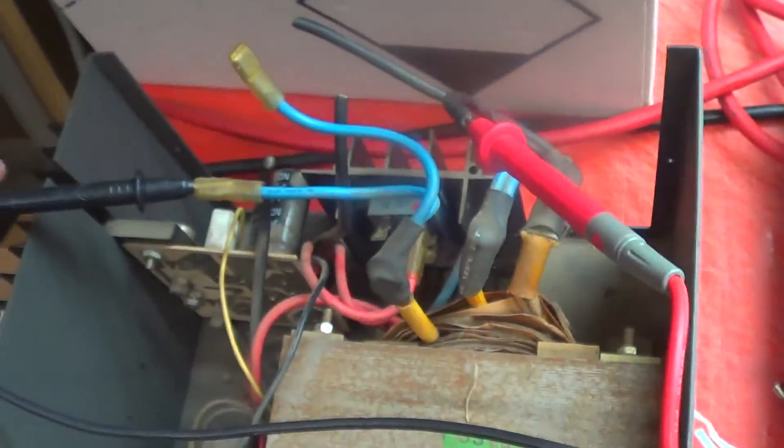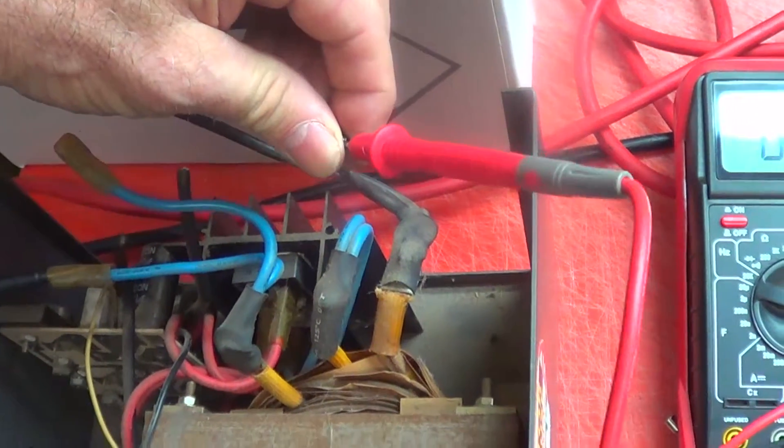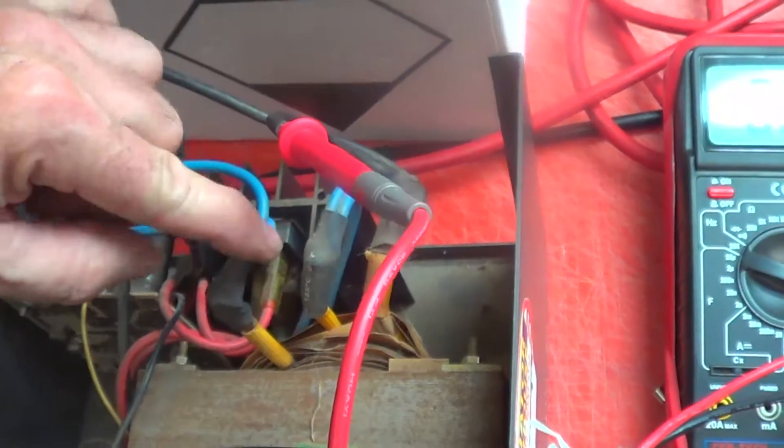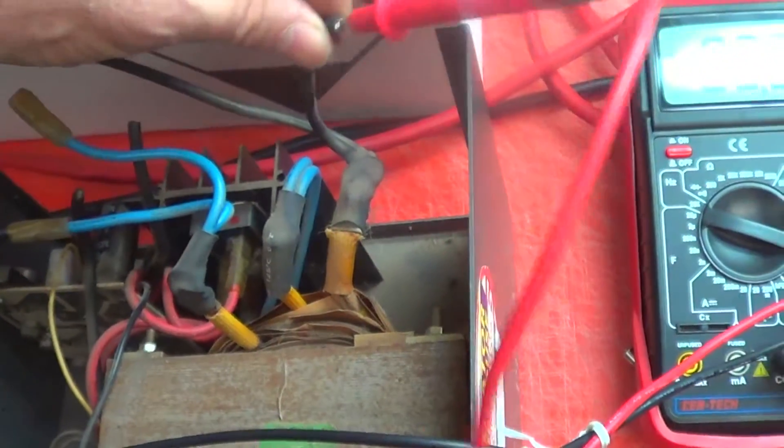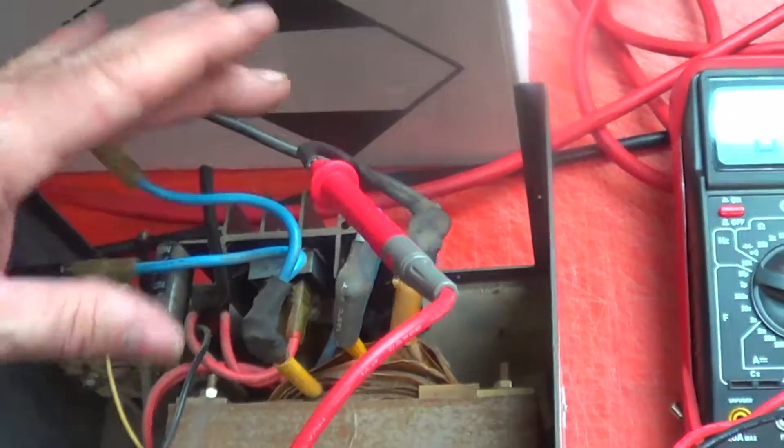We've got a voltmeter connected up from one edge of the transformer to the center tap, which is in black. This is the full voltage, blue to blue. Blue to one side here. We'll call this blue left, blue right. That's half the voltage of the output of the transformer.